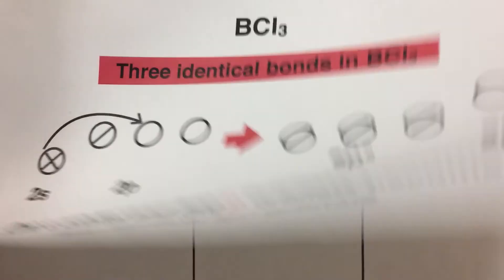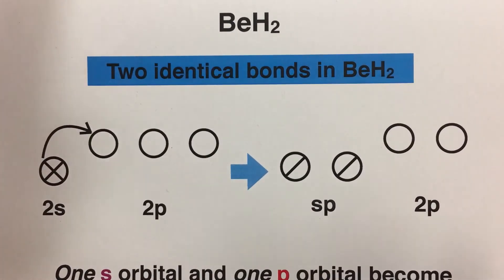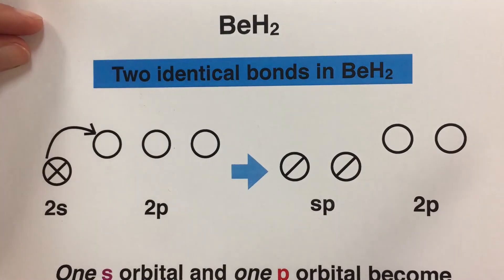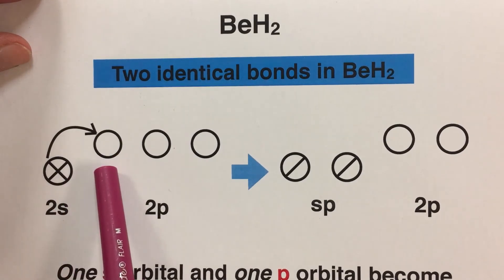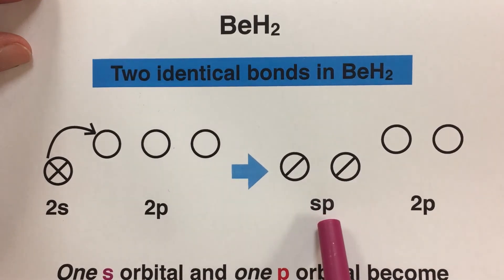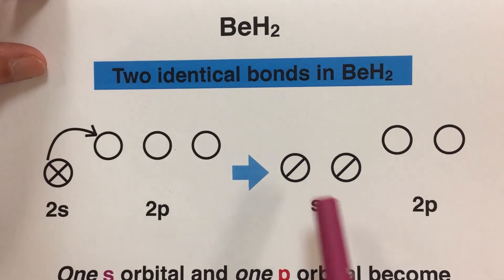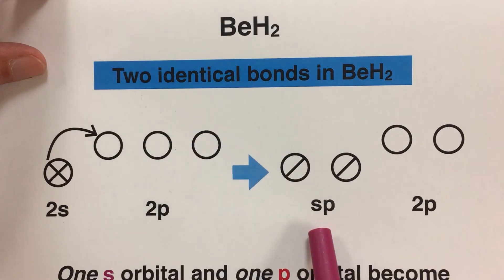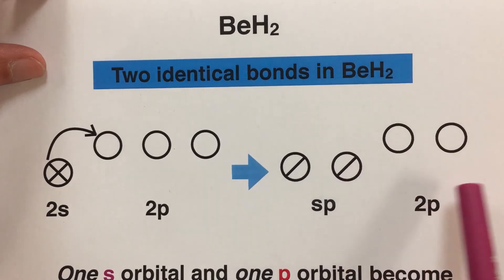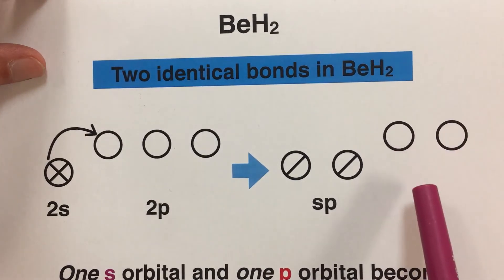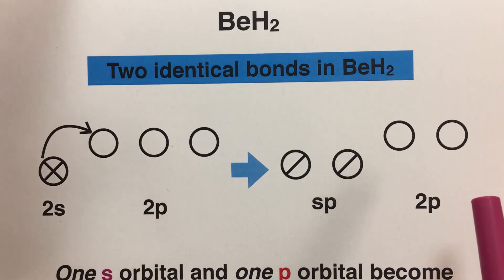The last example is beryllium, which is an exception that only makes two bonds. Looking at its orbital diagram, one S electron moves to an empty P orbital. The S and P orbitals hybridize to form SP hybrid orbitals — SP because you used one S and one P orbital. This gives two half-filled orbitals that allow beryllium to form two bonds. Two P orbitals remain unhybridized. You can check the notes for diagrams of these hybridization shapes.